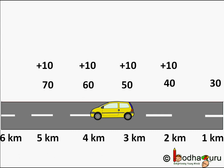You must have noticed the pattern in the list. We get the next value of the fare by adding 10 rupees to the previous value of the fare. The fare of a given kilometre is obtained by adding a fixed number — that is 10 rupees in this case — to the fare of the preceding kilometre.